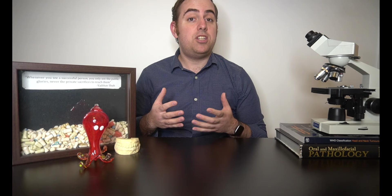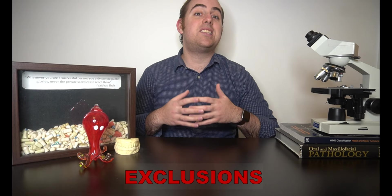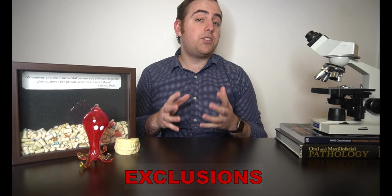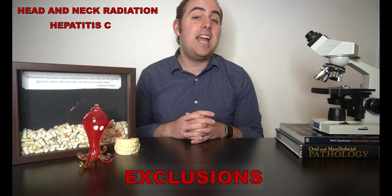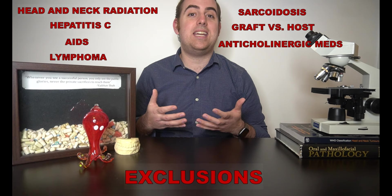Before evaluating a patient using the American-European consensus group criteria there are several factors that exclude patients from a Sjogren's diagnosis. These other factors can explain the patient's symptoms outside of this inflammatory condition. These exclusion criteria include past head and neck radiation, hepatitis C infection, AIDS, lymphoma, sarcoidosis, graft-versus-host disease, and anticholinergic medications. All of these may explain the patient's dryness separate from a true Sjogren's syndrome.